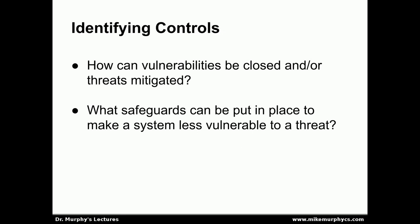In order to identify controls, we need to ask ourselves what kind of vulnerabilities exist for the types of threats we've determined are present, and how those vulnerabilities can be closed or the threats mitigated. What safeguards can we put in place to make the system less vulnerable to a specific threat? What types of protective measures can we take?